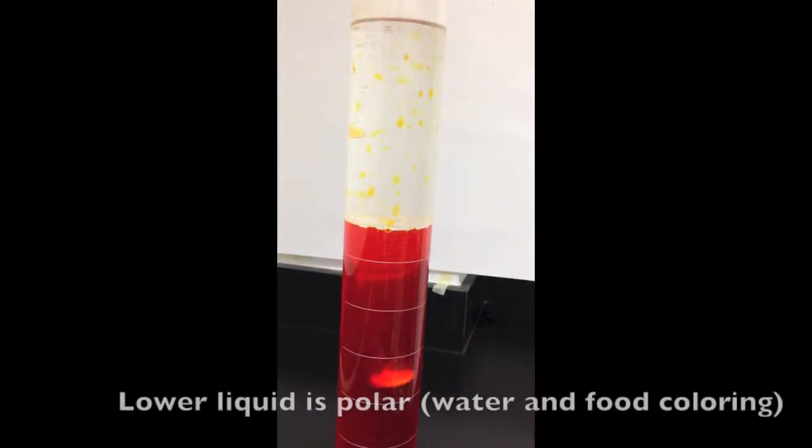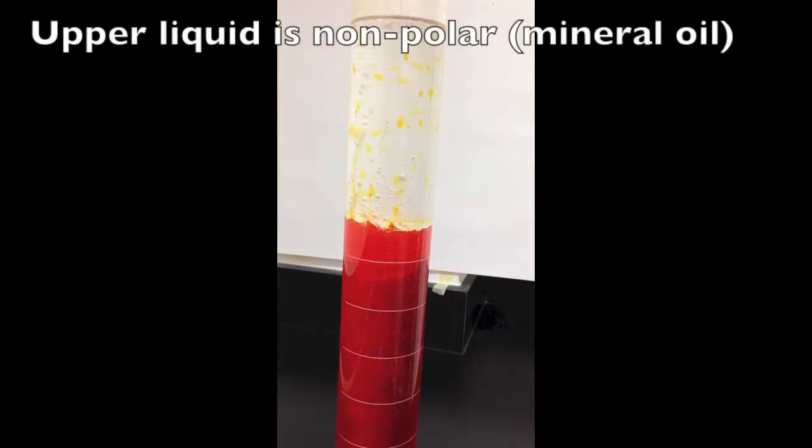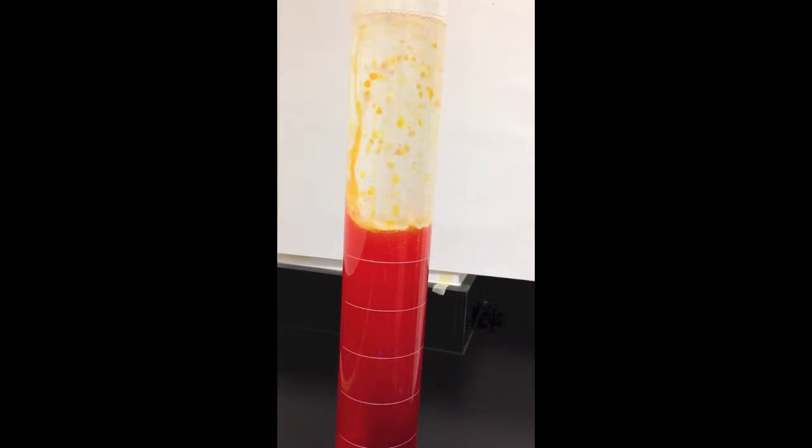It's pretty straightforward. You're going to take a graduated cylinder, put some water in the bottom of it. You can add food coloring if you want. And then an upper layer of something non-polar that will float on water. I used mineral oil here.